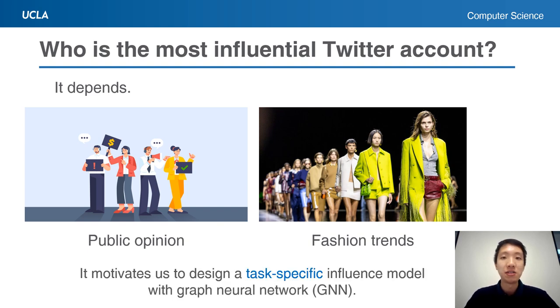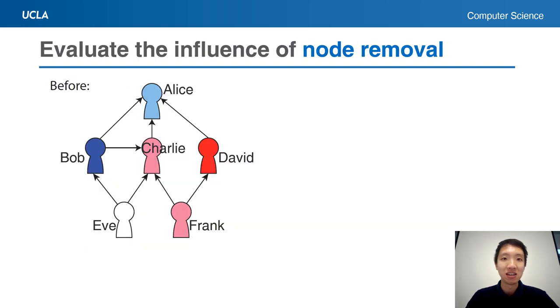It motivates us to design a test-specific influence model with graph neural network. It might be difficult to directly evaluate the node influence with graph neural network, so we consider the influence of node removal.